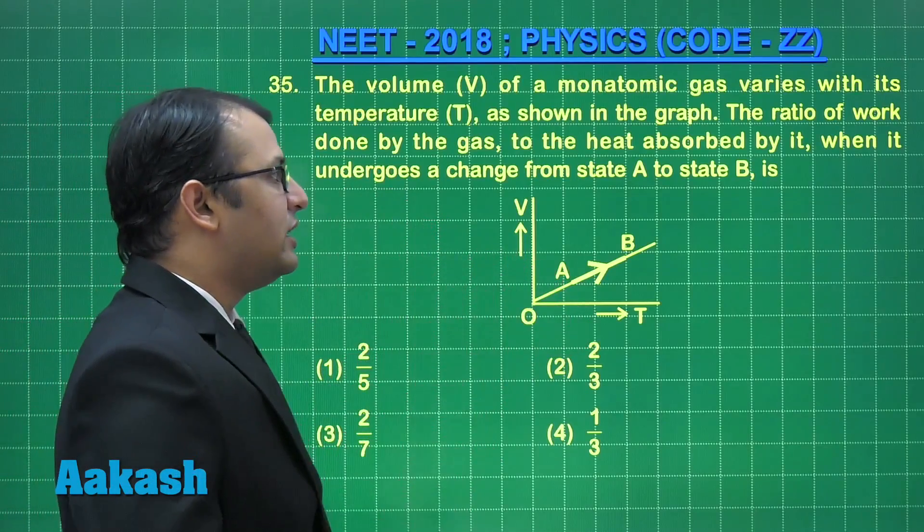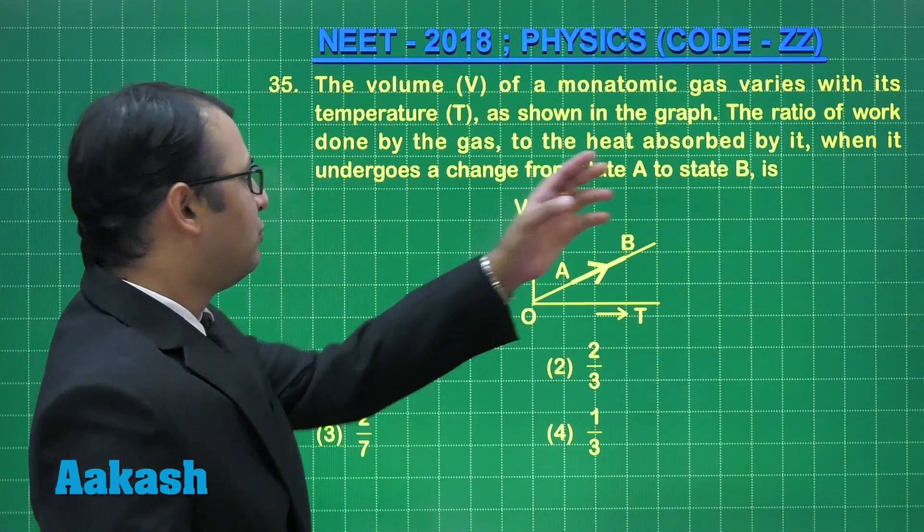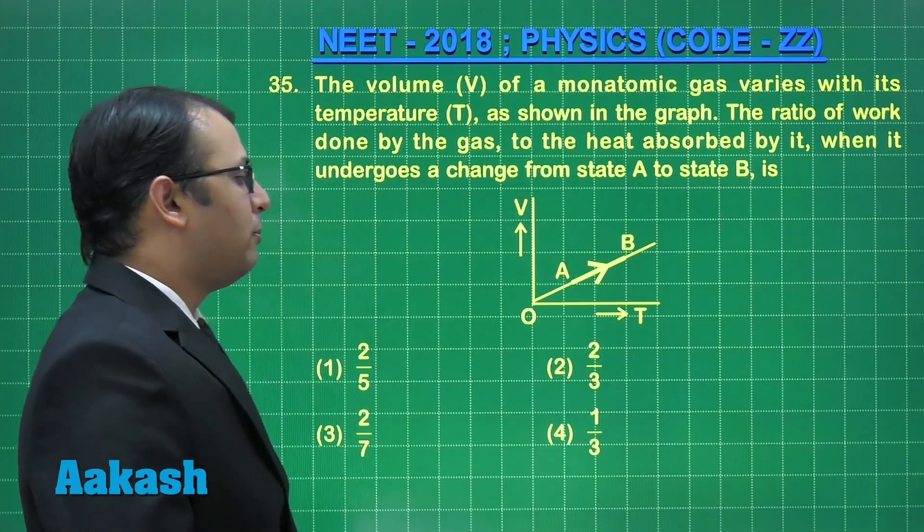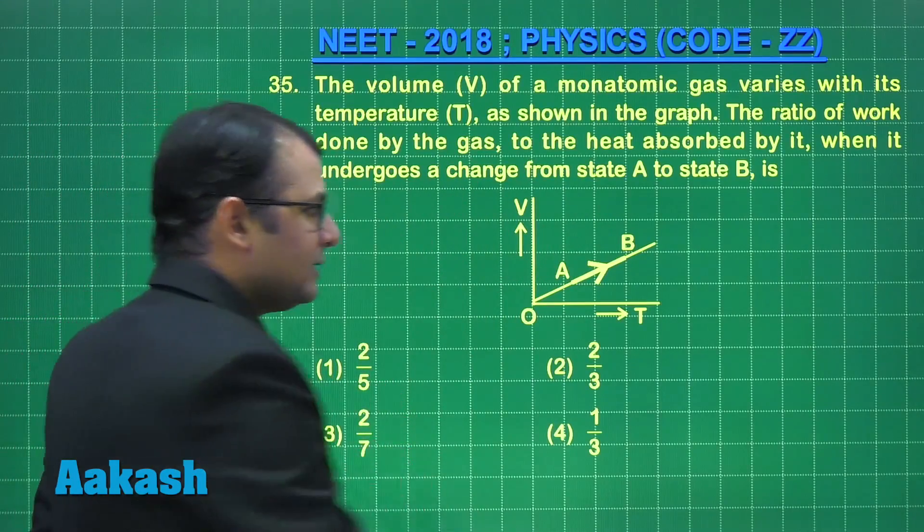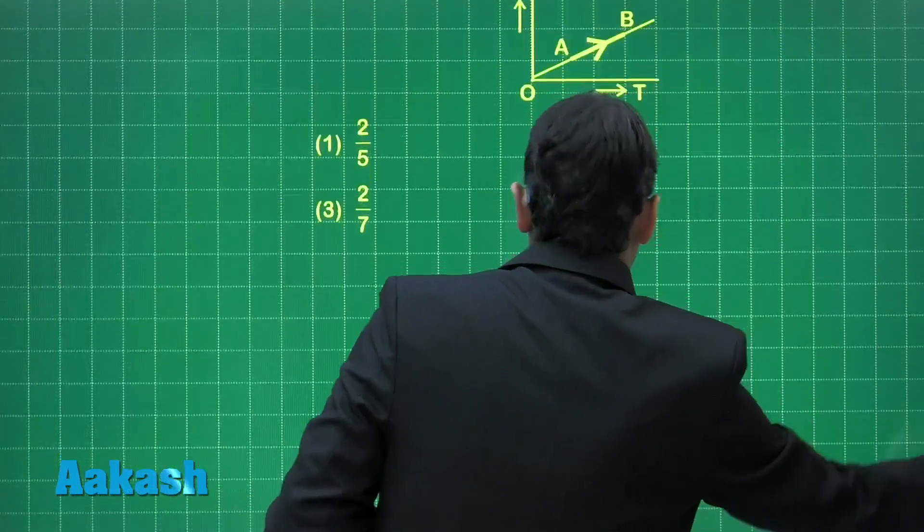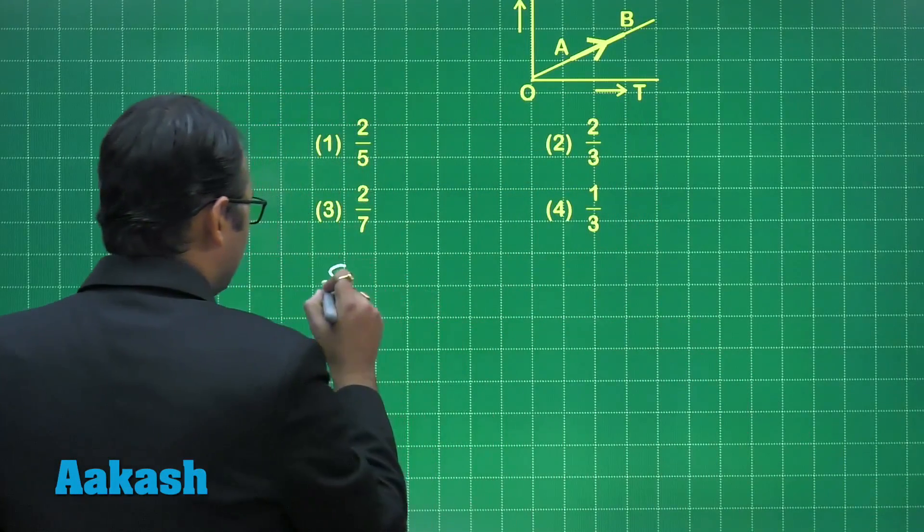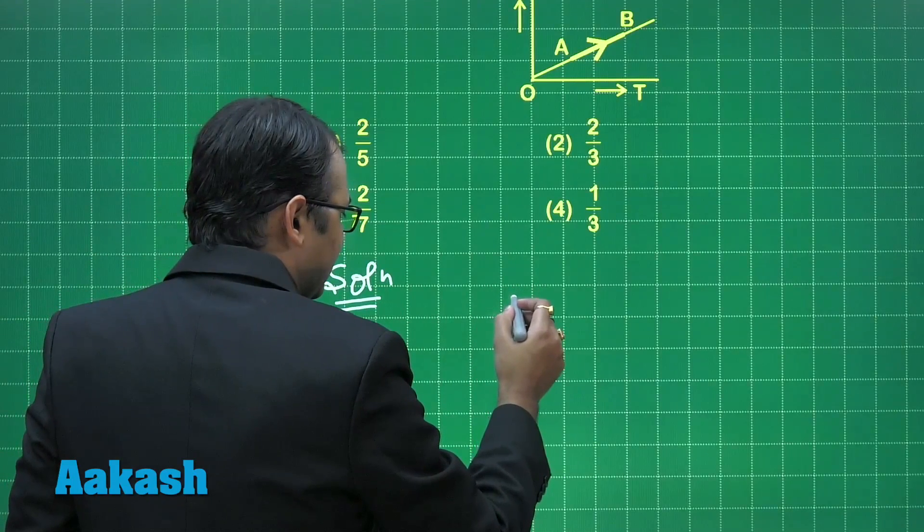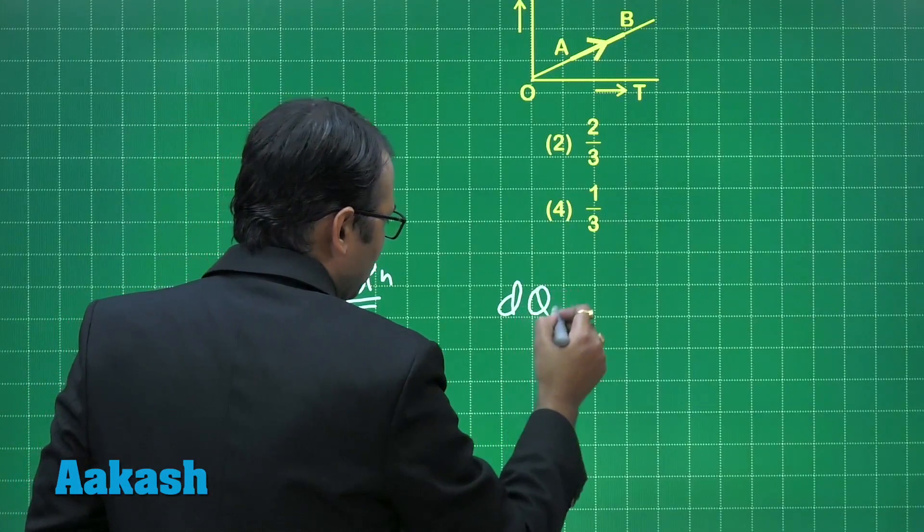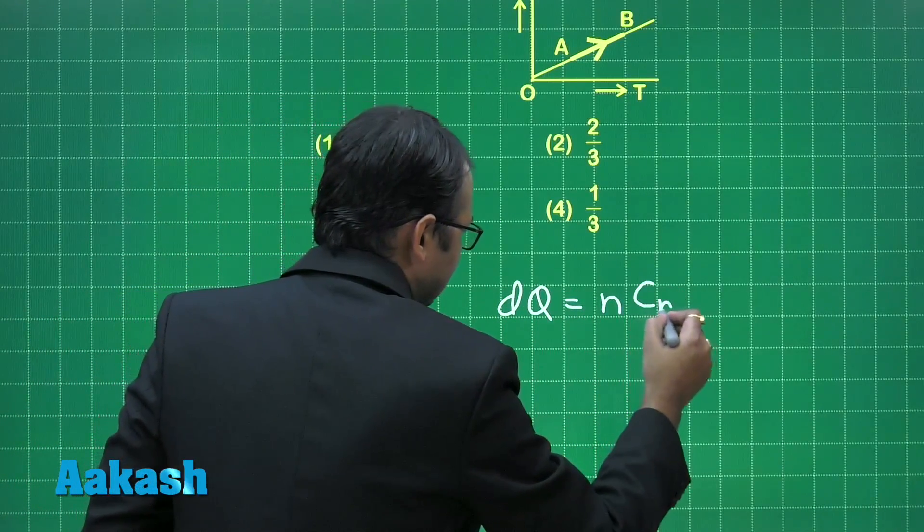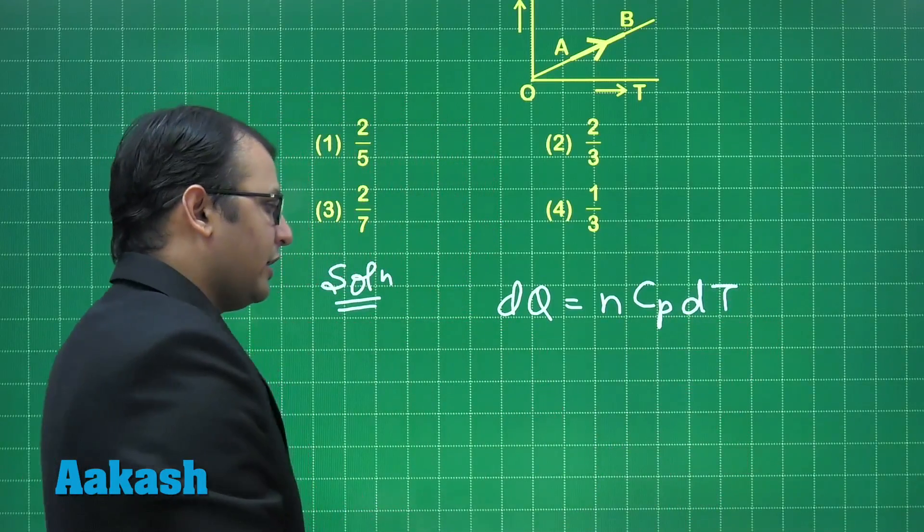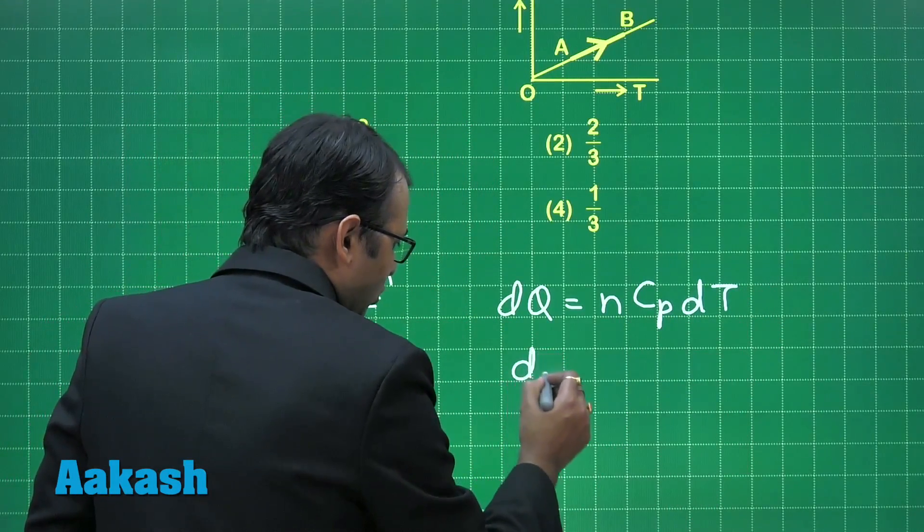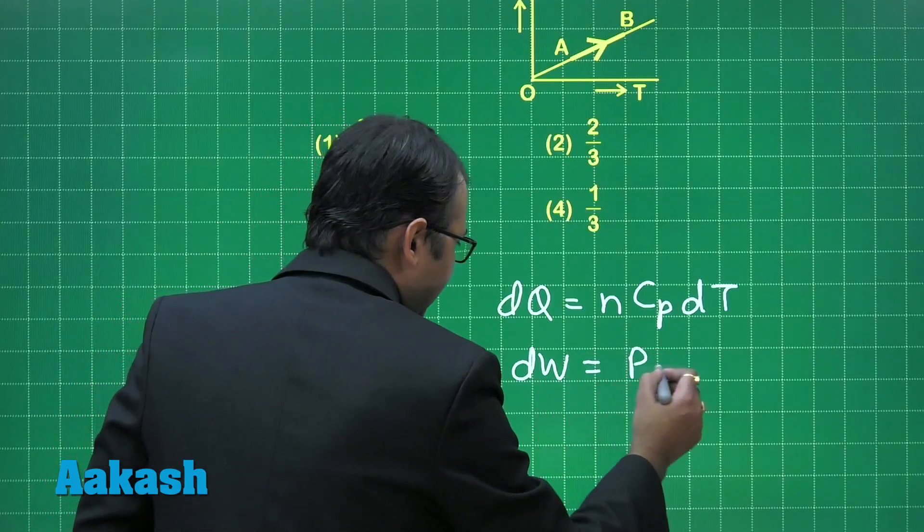the change from A to B. So what is being asked: the ratio of work done to the heat absorbed by the gas, and these are the options. Let's see the solution. Heat given, if I say dQ, then we can write it as n Cp dT. Then what about work done? So dW can be written as PdV